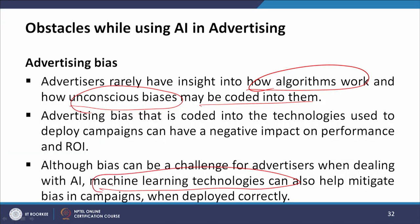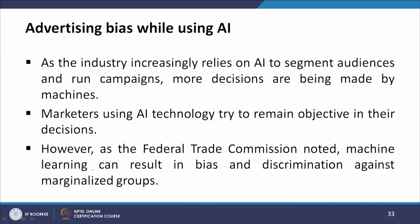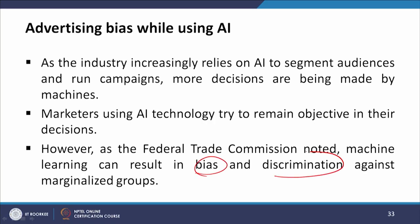As the industry increasingly relies on AI to segment audiences and run campaigns, more decisions are being made by machines. Marketers using AI technology try to remain objective in their decisions. However, as the Federal Trade Commission has noted, machine learning can result in biases and discrimination against marginalized groups.